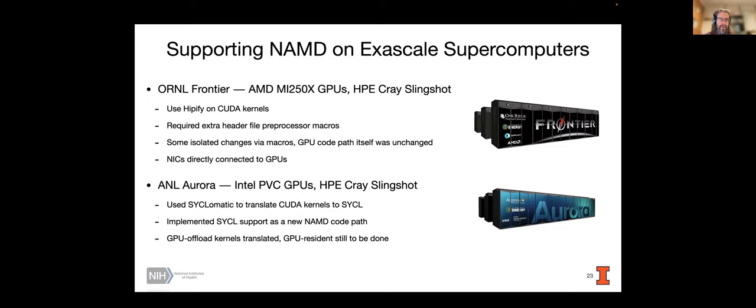Now for Aurora on the other hand, this is going to be based on Intel GPUs. And so our approach here is to implement this in SYCL and we do have some automatic translation tools that can take our CUDA kernels and turn them into SYCL code, but it's not something that we can really support right now on the same GPU code path. So this is really effectively giving us yet another GPU accelerated code path through NAMD. That's something that we're going to have to deal with eventually. But anyway, it's been a longer process. It hasn't been as easy to port NAMD to Aurora. At the moment we do have all of our GPU offload kernels ported and we still need to port the GPU resident parts of NAMD.